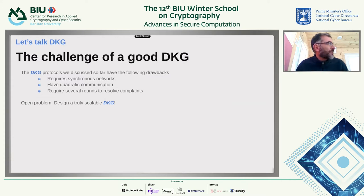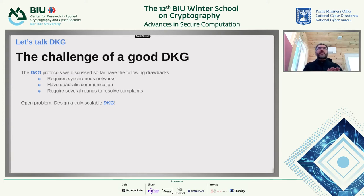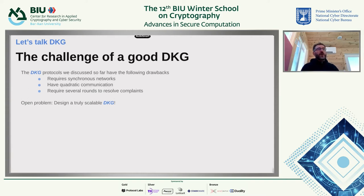The last thing I wanted to discuss about the discrete-log-based schemes is what's really challenging: the design of a good DKG protocol. The DKG protocol is a protocol that establishes a random secret which is shared among the players and the corresponding public key — so if the secret is X, the corresponding G to the X is public, to be used as a public key or as a public nonce in the generation of a signature like Schnorr.